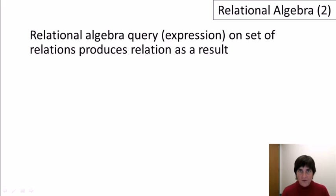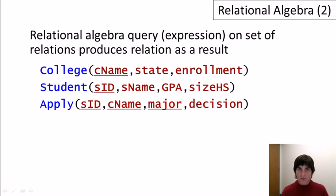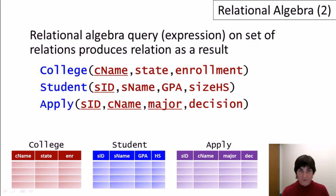As a reminder, we apply a relational algebra query or expression to a set of relations, and we get as a result a relation as our answer. For our examples, we're using an imaginary database about college admissions. We have a relation of colleges, a relation of students, and a relation with information about students applying to colleges. We'll keep at the bottom of the video depictions of those relations with a few abbreviations so that names aren't too long.